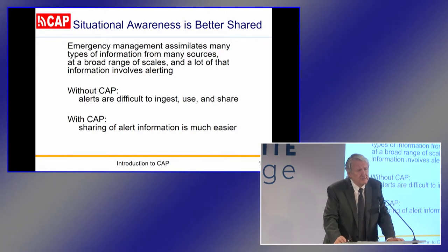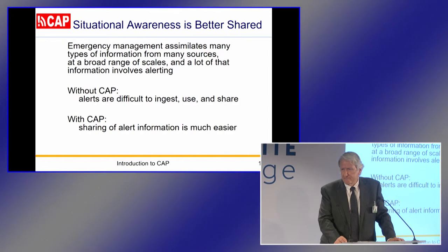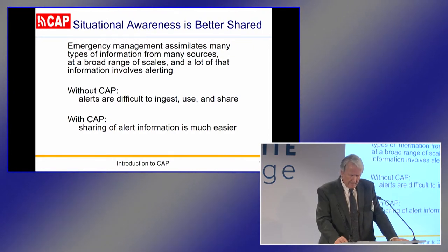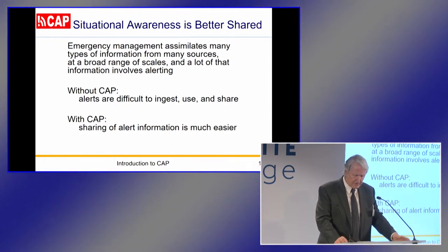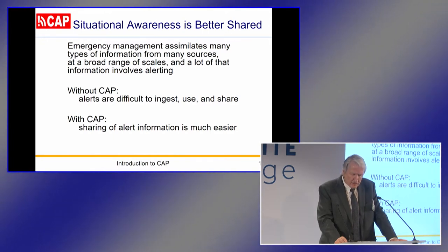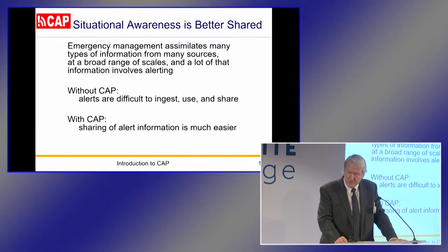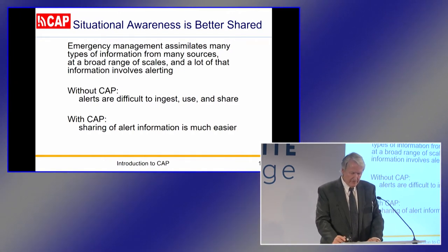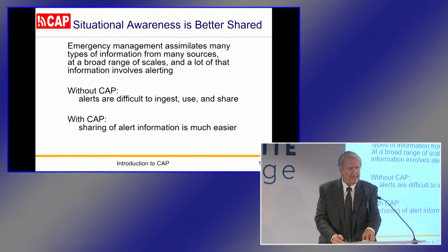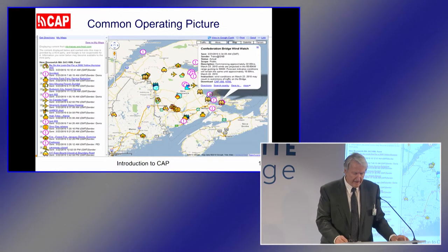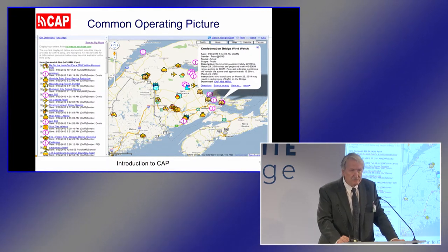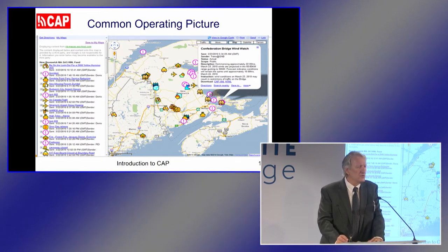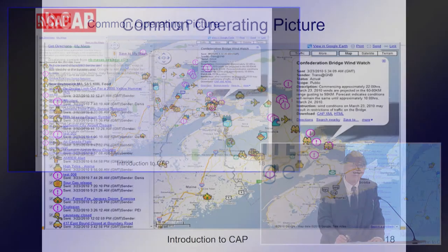Emergency managers must assimilate information of many kinds and from many different sources, at scales ranging from local to national and beyond. Alerts are a big part of that, of course. Without CAP, this variety of alerts is really difficult to get, to use, and to share, because they're communicated in so many media and formats. Information gathering and analysis is much easier with CAP alerts. Here we see CAP alerts displayed on a map interface, supporting the emergency management function called shared situational awareness, or maintaining a common operating picture.